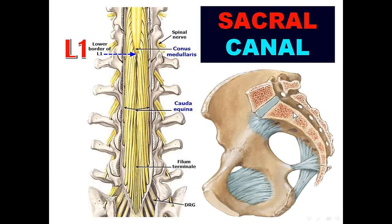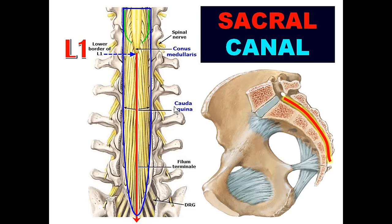The lower end of the spinal cord is called the conus medullaris, located opposite the lower border of L1. In the sacral canal, the filum terminale descends from the conus, accompanied by the cauda equina nerve roots. The dura and arachnoid mater end opposite S2. Additional contents include branches of lateral sacral arteries, venous plexus, and fat.